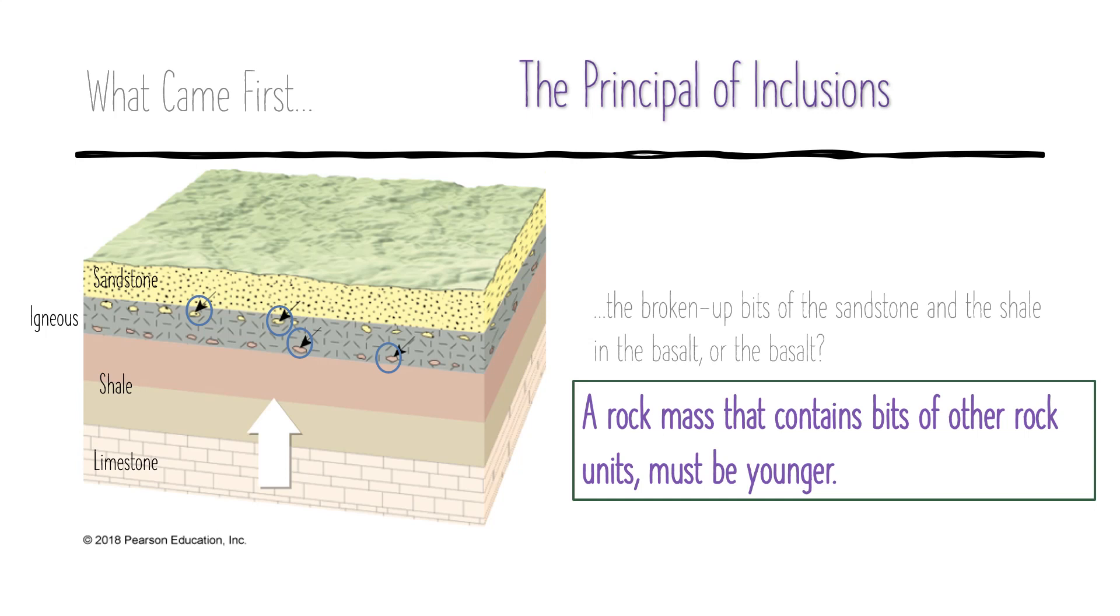So now we have the principle of inclusions, which states that a rock mass that contains inclusions or bits of other rock units has to be younger than those inclusions, right? The pieces must first exist before they can get stuck into a newly forming rock layer. You can't form pieces of one rock into another completely formed rock.